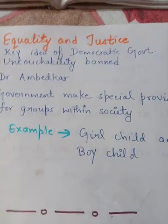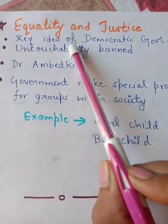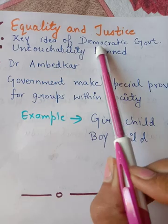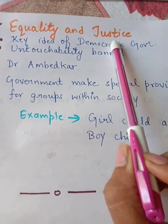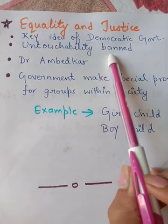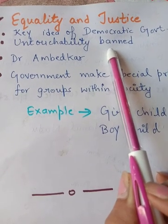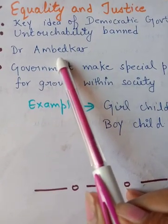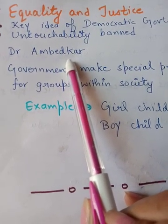The last topic is equality and justice. In a democratic government, equality and justice are inseparable — that is the main idea. According to this principle, untouchability was banned so that all people of the country should be considered equal. Dr. Ambedkar played a very important role in this.